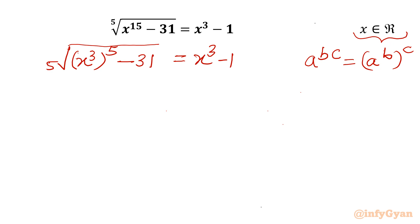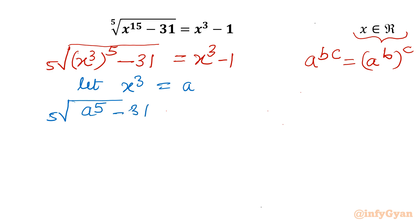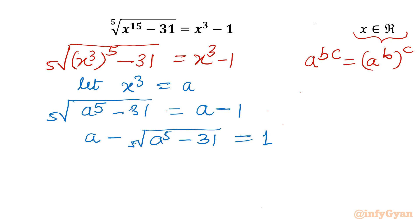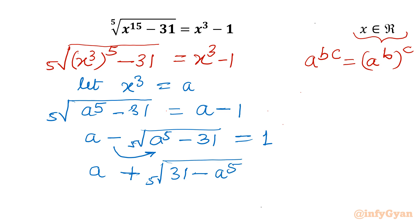Now I will use substitution. Let x cubed equal a. So our radical equation becomes: the 5th root of (a to the power 5 minus 31) equal to a minus 1. Rearranging, a minus the 5th root of (a to the power 5 minus 31) equals 1. Taking the minus sign inside the radical: a plus the 5th root of (31 minus a to the power 5) equals 1.